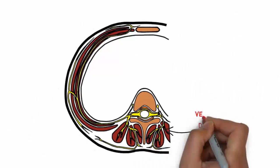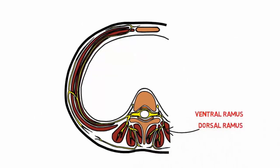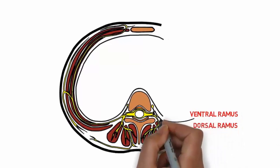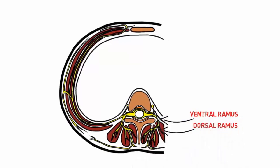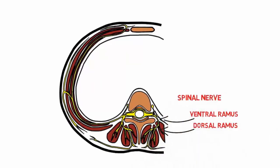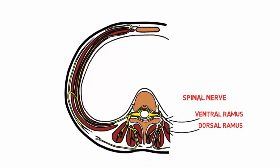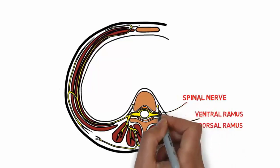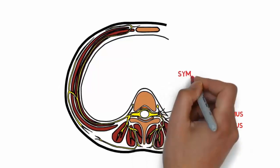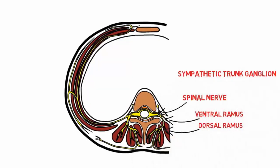The nerves that innervate the abdominal wall arise from the ventral rami of the T6-L1 spinal nerves. These nerves wrap around the body to provide innervation to the lateral and anterior abdominal wall.